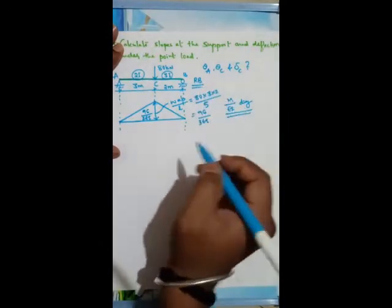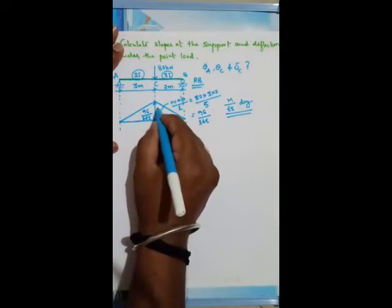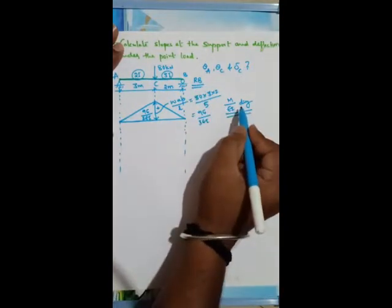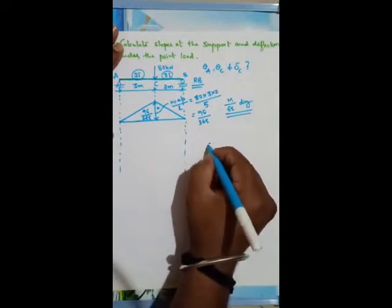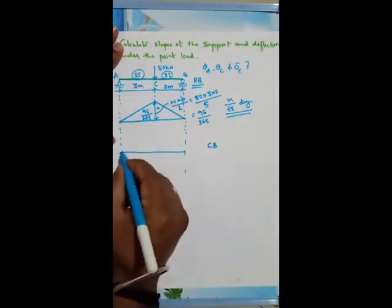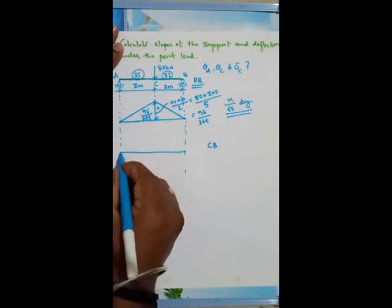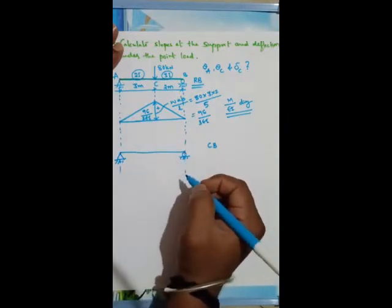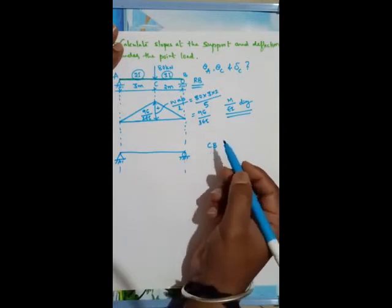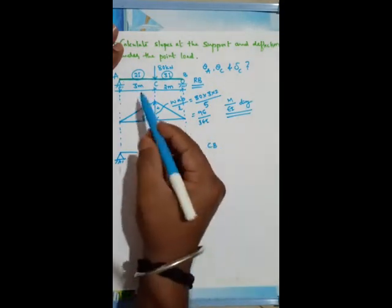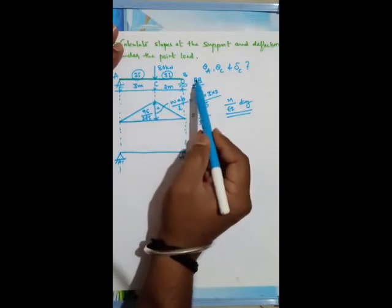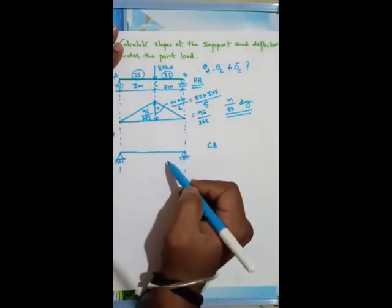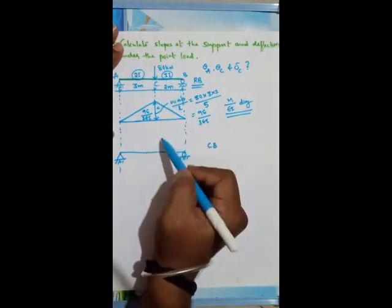This is the M/EI diagram — this is the real beam. The diagram will always be positive for a simply supported beam. Once you get the real beam M/EI diagram, the next step is to draw the conjugate beam. For a simple/roller/hinge end, it remains the same in the conjugate beam. According to conjugate beam theory, the compatibility between slope and shear force, and deflection and bending moment, holds. The M/EI diagram of the real beam acts as the loading on the conjugate beam.